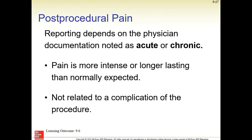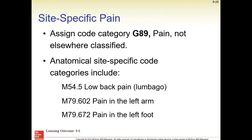Post-procedural pain — that's like the thoracotomy we talked about. Site-specific pain: there is category G89, not elsewhere classified, so it's not site specific. Anatomical site-specific codes do exist; they largely come from the musculoskeletal system. We see some examples in M54.5: lower back pain, pain in the left arm, pain in the left foot. So if it's just a general pain diagnosis, that's what category G89 covers. There are specific types of pain.